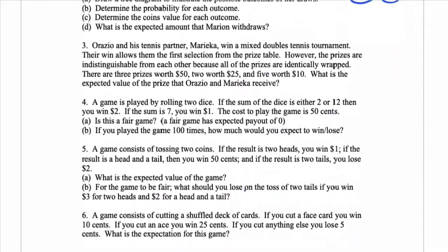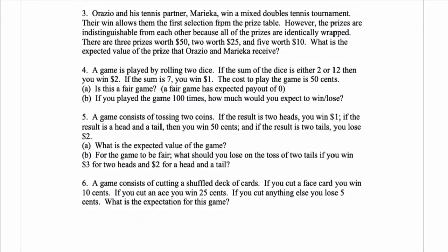We're going to do number three here. So this guy and his tennis partner win a doubles tournament. Their win allows you to select a prize. However, the prizes are indistinguishable from each other because they're identically wrapped. So it's like random.